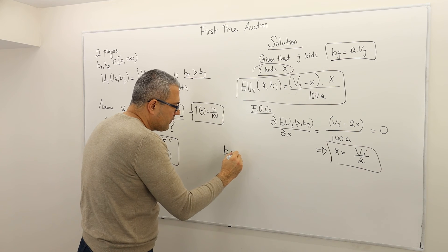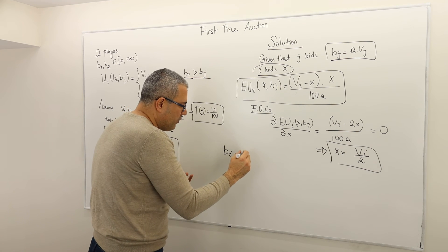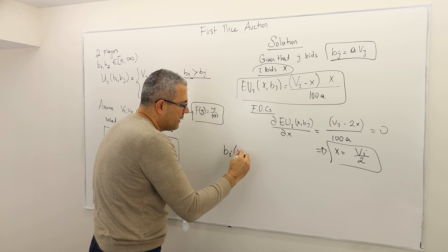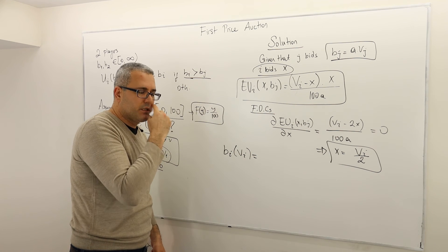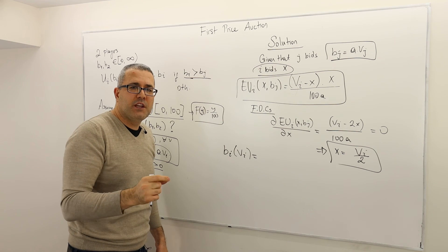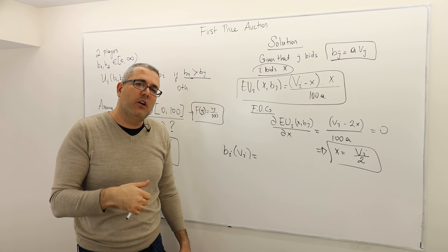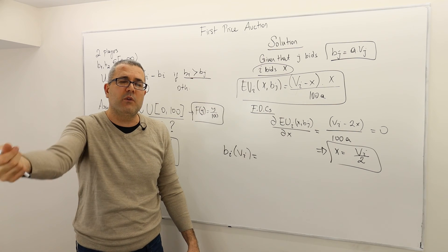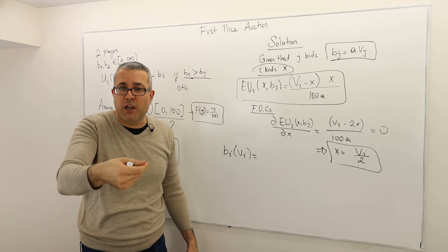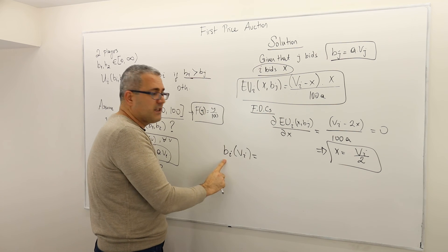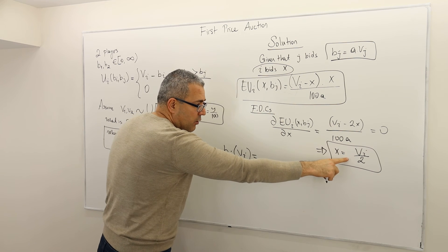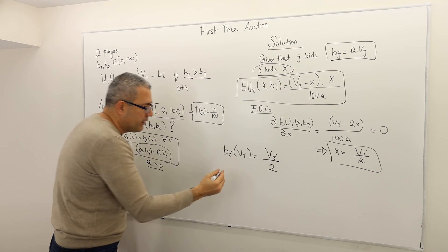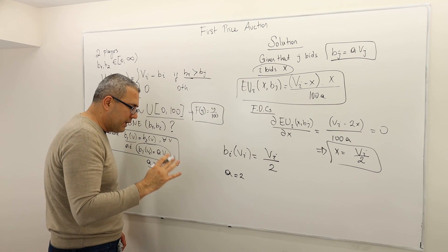So in the Bayesian Nash equilibrium, if my opponent is playing a linear strategy, my best response strategy is V_I / 2. The bid function maps valuation V_I to the bid, and according to this result it has to equal V_I divided by 2. Therefore A has to be 1/2.